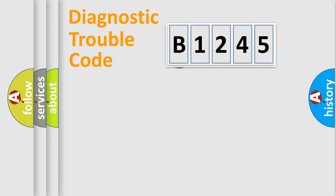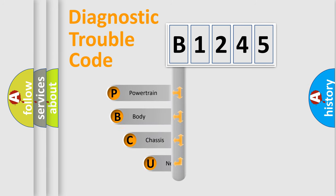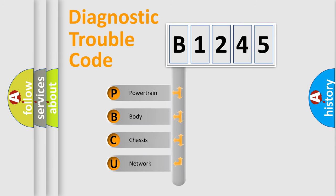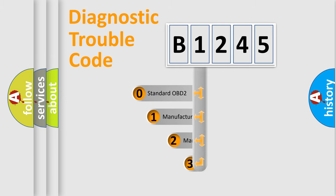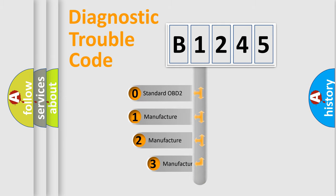Let's look at the history of diagnostic fault code composition according to the OBD2 protocol, which is unified for all automakers since 2000. We divide the electric system of the automobile into four basic units: Powertrain, Body, Chassis, and Network. This distribution is defined in the first character of the code.